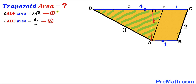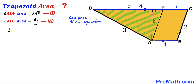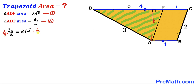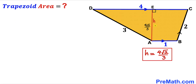We now have two equations with identical left-hand sides, so we equate the right-hand sides: 3h/2 = 2√2. To isolate h, multiply both sides by 2/3: the 3s cancel and the 2s cancel, giving h = 4√2/3 units. So the height of this trapezoid is 4√2/3.